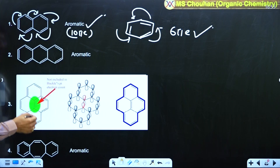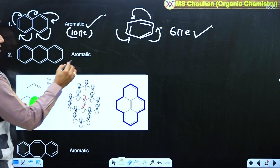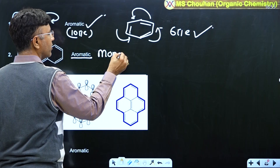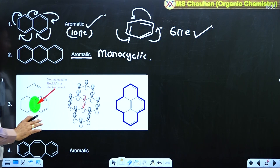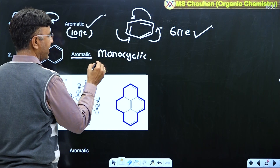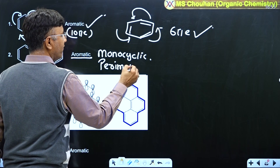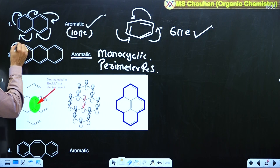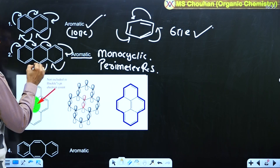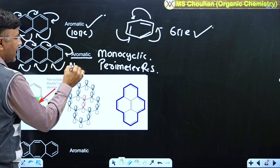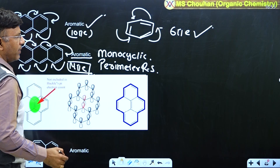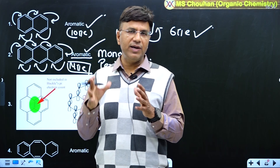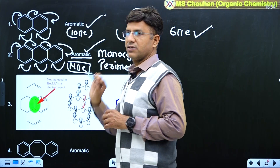Now let us consider anthracene. We have to check if Hückel rule is applicable. First: is it a monocyclic compound? No, it is not. Second: does any one of the resonating structures have perimeter resonance? Yes, there is perimeter resonance. How many π electrons in the perimeter resonance? 14 π electrons, cyclic, planar — this means anthracene is aromatic, and we apply Hückel rule on the complete molecule because of this perimeter resonance.